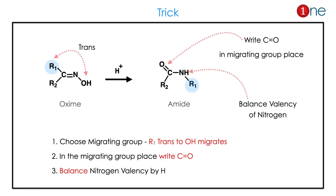Here are some tricks to solve the problems. First, choose the trans group — here it is R1. Migrate the trans group to the nitrogen. Where the migrating group was, write C=O. Then compensate the nitrogen valency with hydrogen. So three steps: migration, writing C=O, and balancing the nitrogen valency.